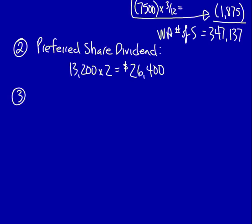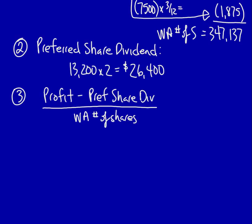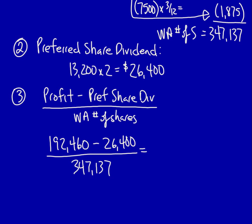Step three: calculate the earnings per share using the formula. Profit minus the preferred share dividend divided by the weighted average number of shares. Using the information available to us, we know that profit was $192,460. We already know the preferred share dividend, $26,400. We also know the weighted average number of shares, 347,137. Do the calculation and we learn that our earnings per share was $0.48 per share.